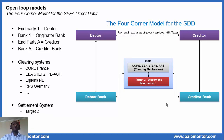This is the four corner model for SEPA direct debits. As you see, end party one becomes the debtor, bank one is the debtor bank, end party A is the creditor, and bank A is the creditor bank. Both banks are interconnected through the clearing and settlement mechanism systems. Clearing systems are almost the same as previously mentioned: CORE, Equens, EBA STEP2, RPS in Germany, Iberpay in Spain, and so on. Settlement mechanism is implemented by settlement systems, and in the SEPA area there is only one — TARGET2 — operated by the European Central Bank.